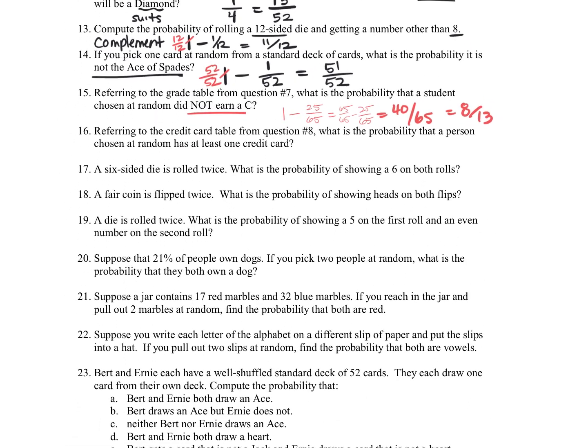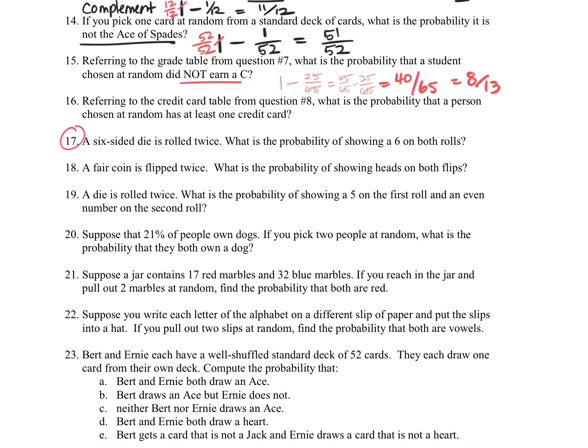All right, let's skip on down to 17. We want a six-sided die that's rolled twice, so two times. What's the probability of showing a 6 on both rolls? So if you roll it the first time, the probability of that happening would be 1 out of 6. And the second roll would be 1 out of 6 as well. So together, remember for the probability of event A and B happening, we multiply those together. So that would be 1 over 36.